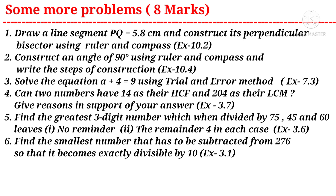Question four: can two numbers have 14 as their HCF and 204 as their LCM? Give reasons in support of your answer — a question from the third chapter. Question five: find the greatest three-digit number which when divided by 75, 45, and 60 leaves (1) no remainder and (2) remainder 4 in each case — a question from the third chapter. Question six: find the smallest number that has to be subtracted from 276 so that it becomes exactly divisible by 10 — a question from the third chapter.